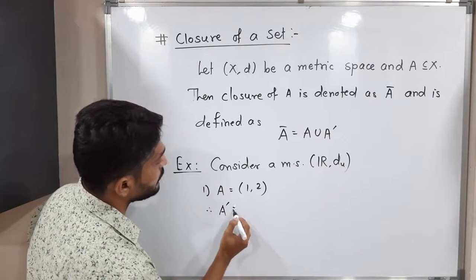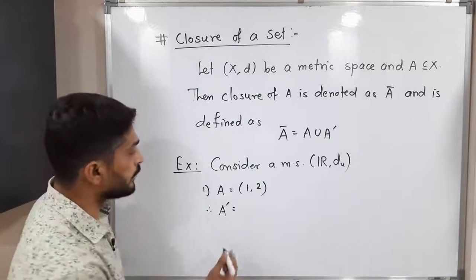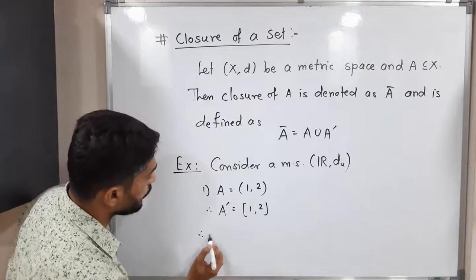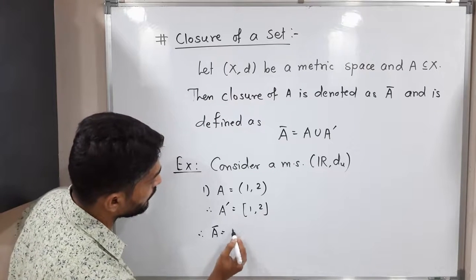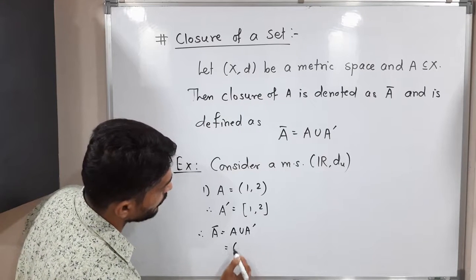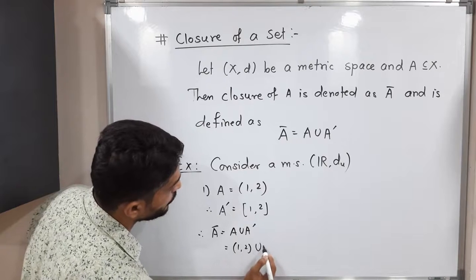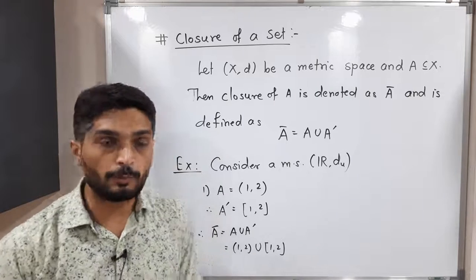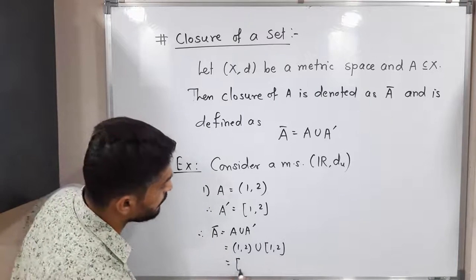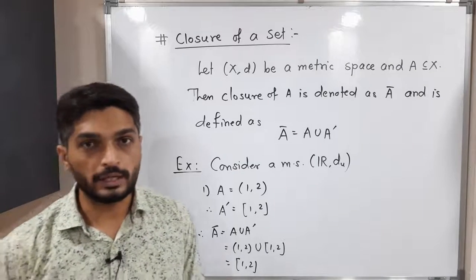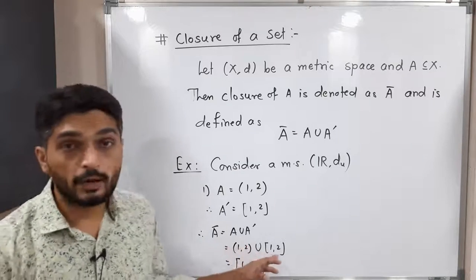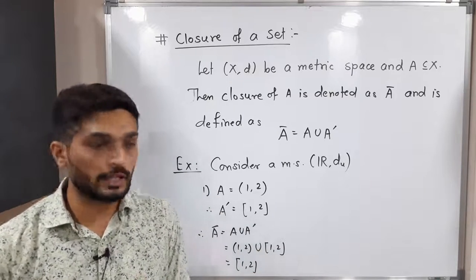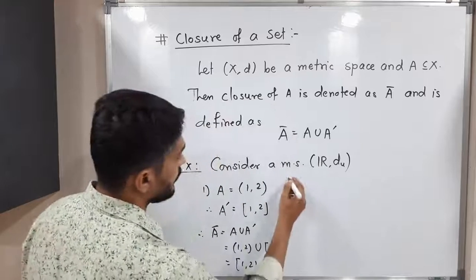A equals the open interval (1, 2). You know that A', the derived set — the set of all limit points of A — will be the closed interval [1, 2]. Therefore the closure of A, which is A ∪ A', equals (1,2) ∪ [1,2]. Since the open interval (1,2) is a subset of [1,2], their union is obviously the closed interval [1, 2]. So if you know the derived set, you can easily find the closure by taking its union with A.